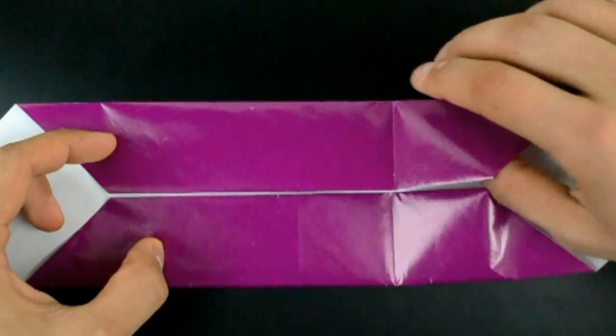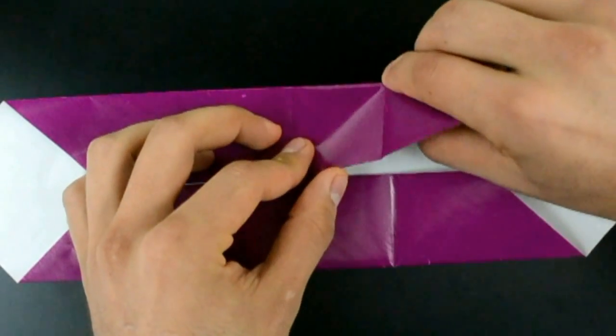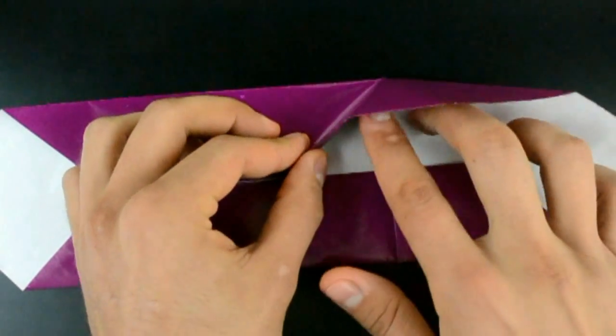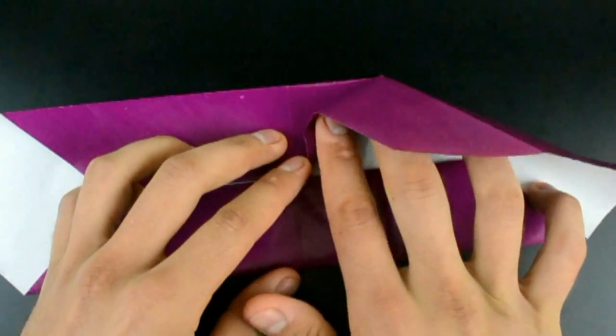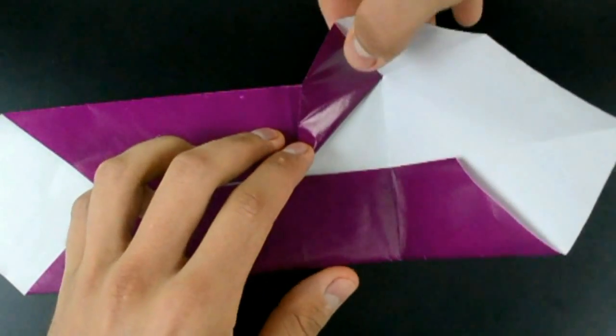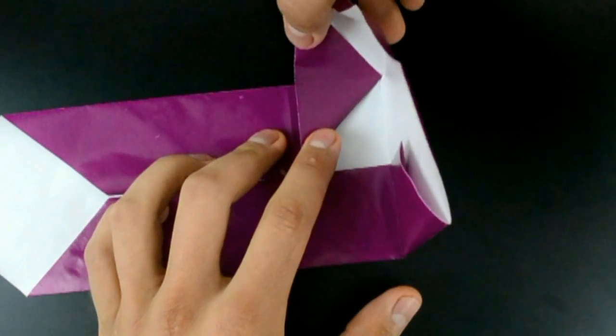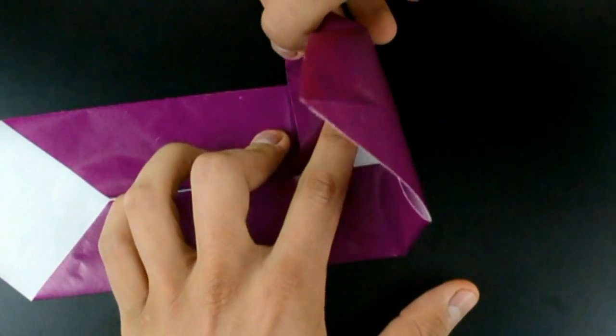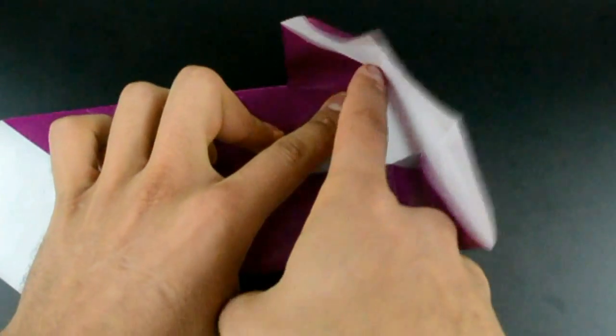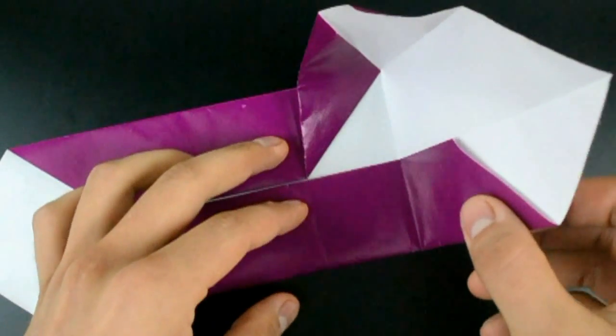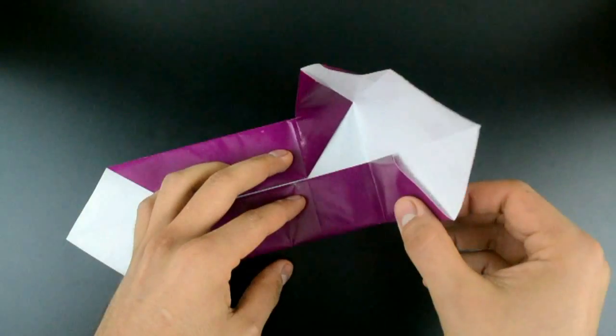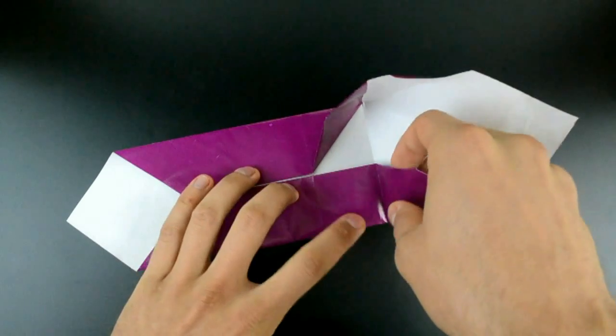So first the top one. Just bring the right side up. And make a crease. Now let's do the other. The right side down.